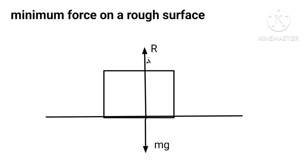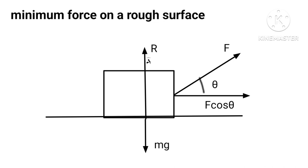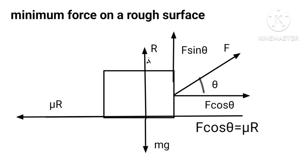When we apply a minimum force F on a rough surface at an angle θ, it can be resolved into two components: horizontal component F cos θ and vertical component F sin θ. A frictional force μR is produced acting against F cos θ. In equilibrium: F cos θ = μR, and R + F sin θ = mg.